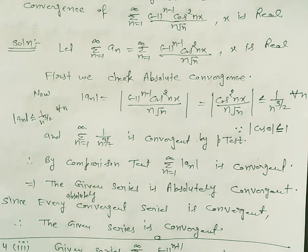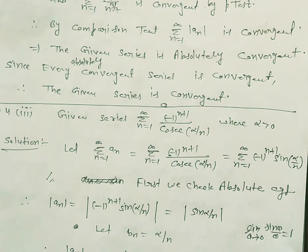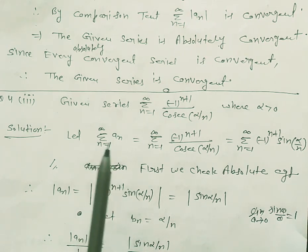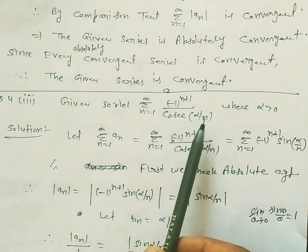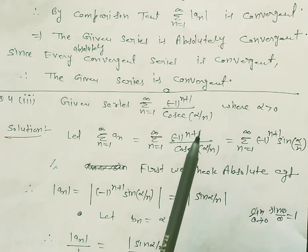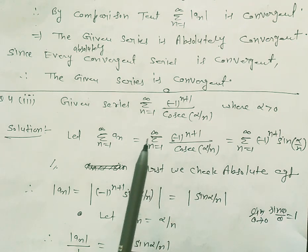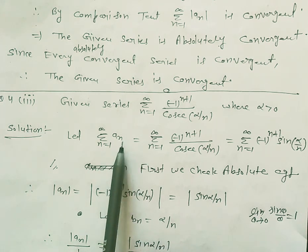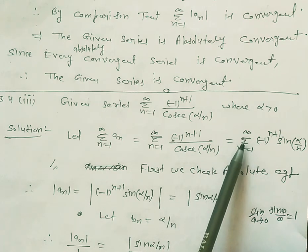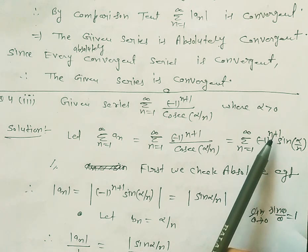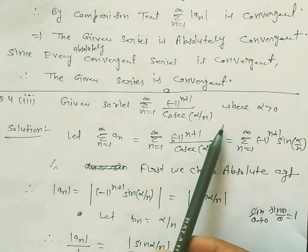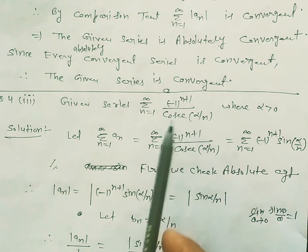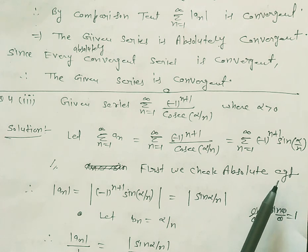Now we discuss Question 4, Part 3. The given series is summation n=1 to infinity of (-1)^(n+1) / cosec(α/n), where α > 0. We write a_n equal to the given series. Since 1/cosec = sin, this can be written as summation n=1 to infinity of (-1)^(n+1) * sin(α/n). First we check absolute convergence, so we take |a_n|.